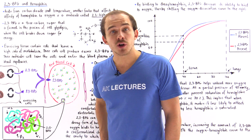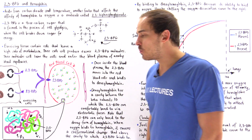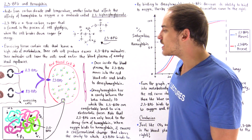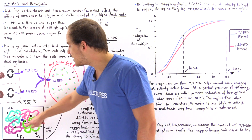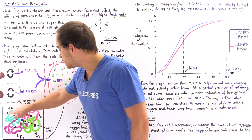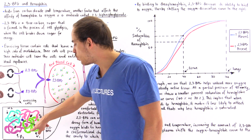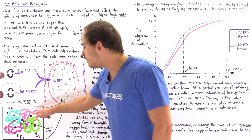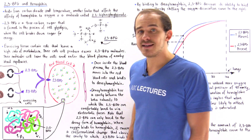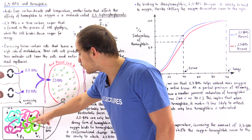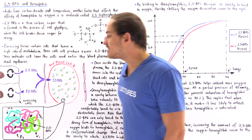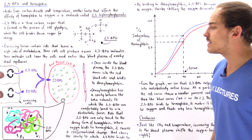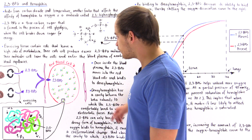Recall that the structure of hemoglobin contains four individual polypeptide subunits: alpha-1, alpha-2, beta-1, and beta-2. Each of these subunits contains a heme group, shown in brown, and that heme group is capable of binding a single diatomic oxygen molecule.